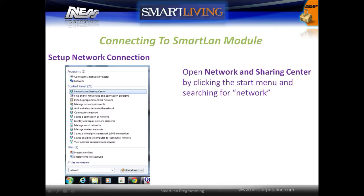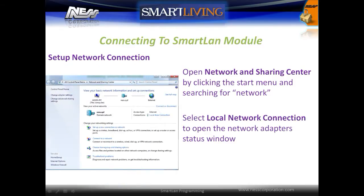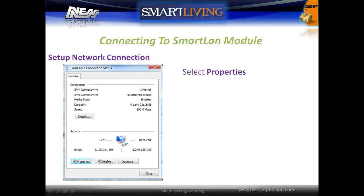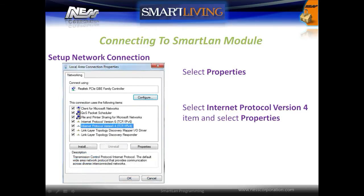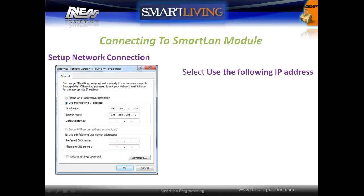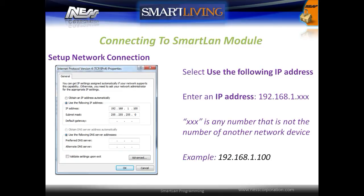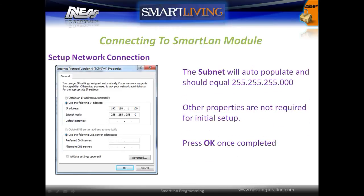On your PC, open Network and Sharing Center by clicking the Start menu and searching for network. Select Local Network Connection to open the network adapter status window, then select Properties. Select Internet Protocol Version 4 from the list and then select Properties. Select the option 'Use the following IP address' and enter an IP address in the same range as the panel — the first three numbers must match, with the last number being any value not used by another device. For example, set the PC to 192.168.1.100. The subnet mask will automatically populate; all other properties are not required for initial setup.